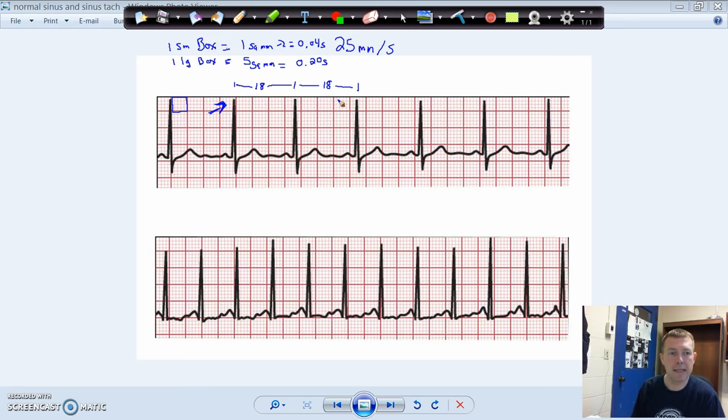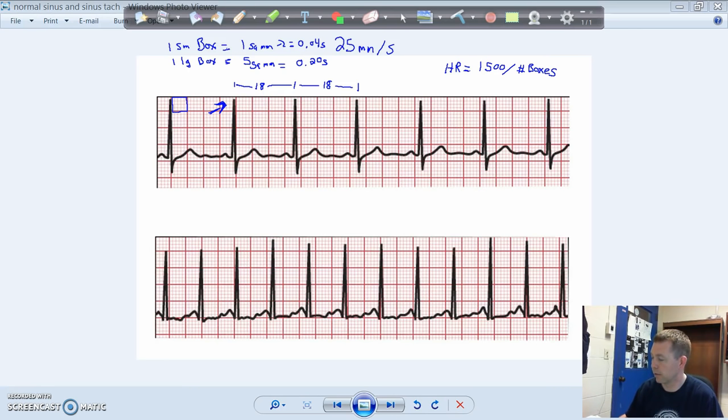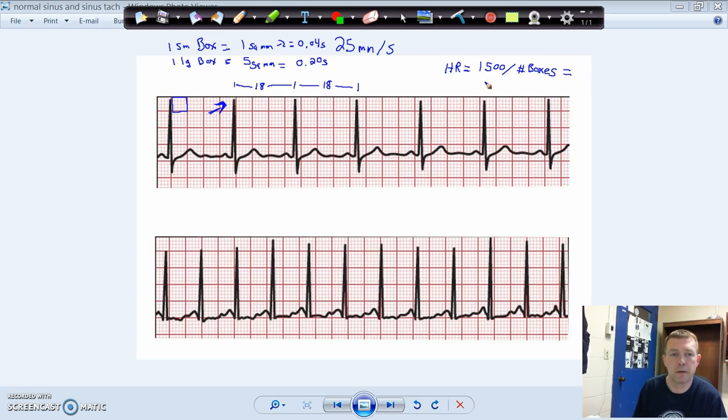Alright, so 18 boxes for each cardiac cycle. Doing all the math, now the computers actually end up doing the math for you. But the easiest way to calculate this out, calculate your heart rate, take 1,500, divide it by the number of boxes. So I'm going to come over here to my computer, 1,500 divided by 18. Heart rate on this guy is going to equal 1,500 divided by 18, which is going to equal 83.3 beats per minute.